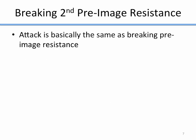Breaking second pre-image resistance — given m1, finding m2 with the same hash — is basically the same as breaking pre-image resistance. That's probably why the two names are so closely related. It's the same brute-force procedure, so breaking second pre-image resistance is just as infeasible as normal pre-image resistance in the general case.